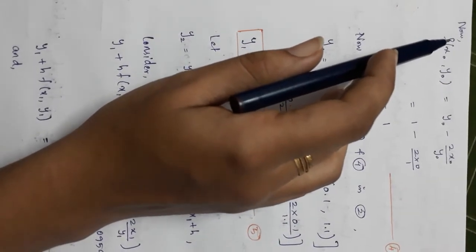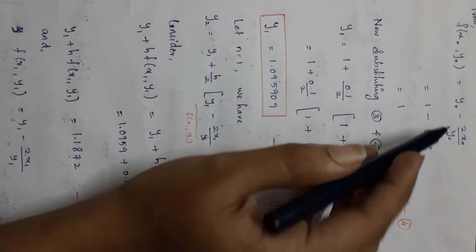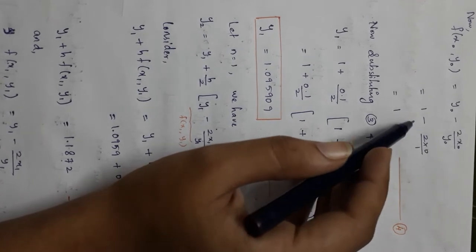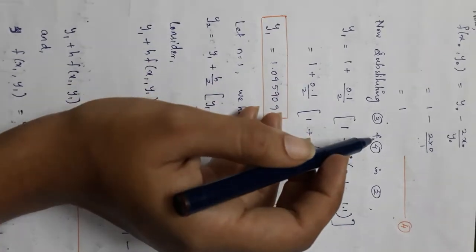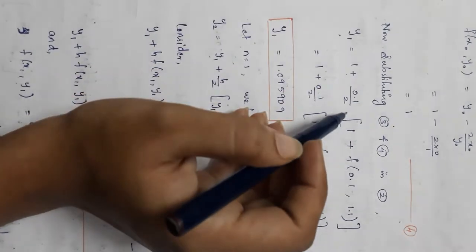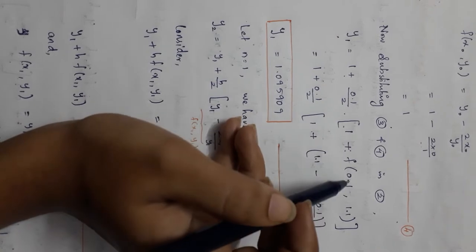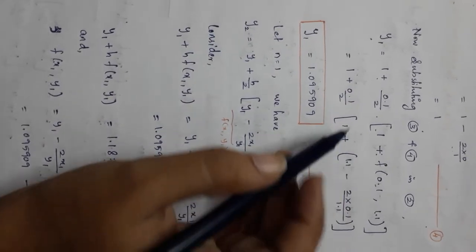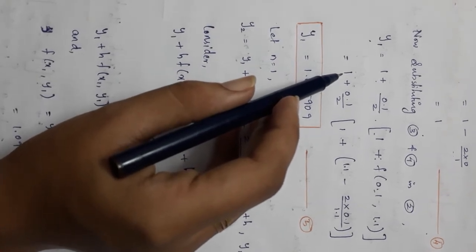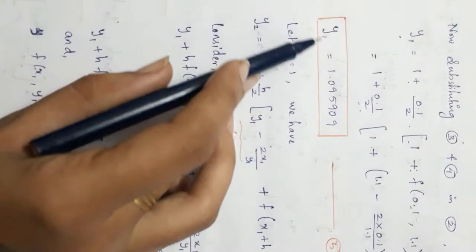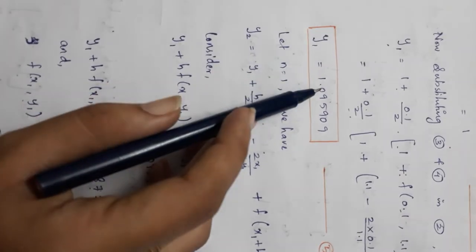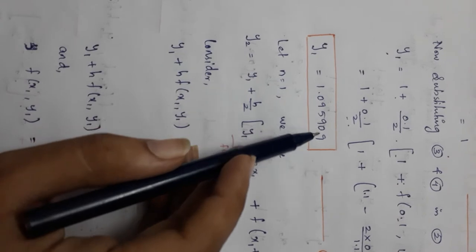Now, f(x₀, y₀) = (y₀ - 2x₀)/y₀ = (1 - 0)/1 = 1. This is Equation 4. Substituting Equations 3 and 4 into the formula: y₁ = 1 + (0.1/2)·[1 + f(0.1, 1.1)] = 1 + 0.05·[1 + (1.1 - 2·0.1)/1.1]. Solving this gives y₁ = 1.095909. This is Equation 5.